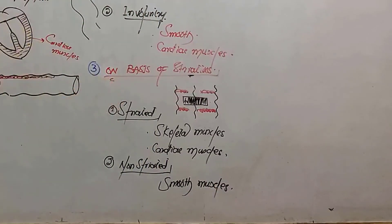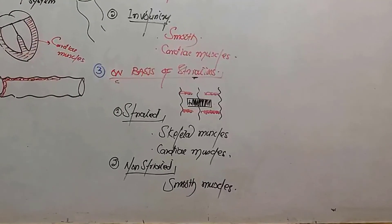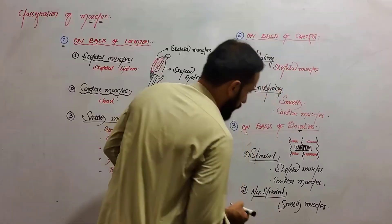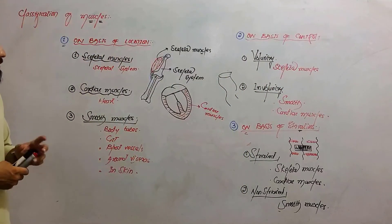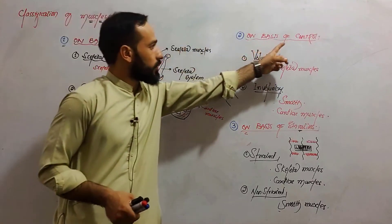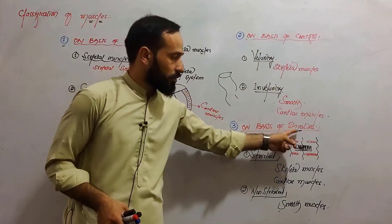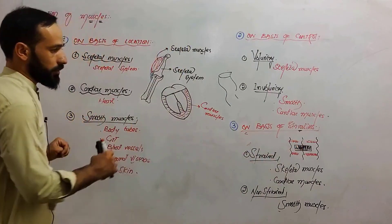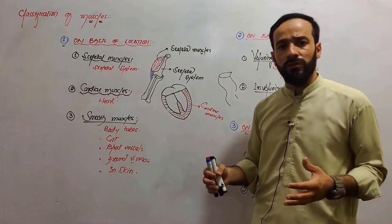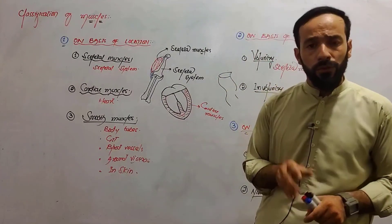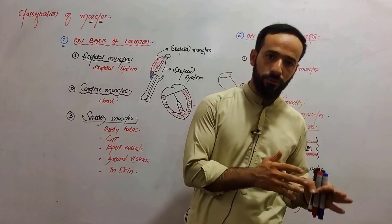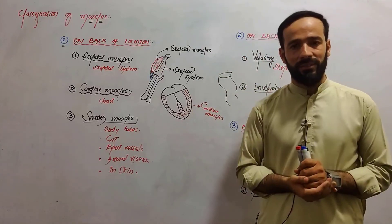So we classified the muscles on the basis of location, on the basis of control, and on the basis of striations. These are the three types of classification. In the next lecture, we will go towards the features and differences between the skeletal muscles, cardiac muscles, and smooth muscles. See you guys there. Till then, Allah Hafiz.